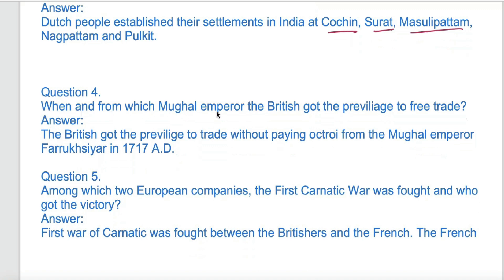When and from which Mughal Emperor did the British get the privilege of free trade? The British got the privilege to trade without paying octroi tax from the Mughal Emperor Farrukh Siyar in 1717, who granted them the right to free trade.